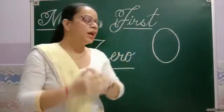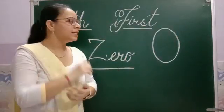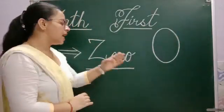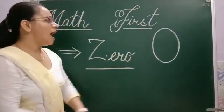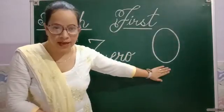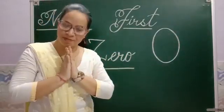So students, we have learnt about the new digit, the new number that is called 0 and it looks like that. Okay students. Bye.